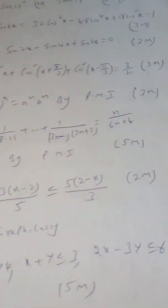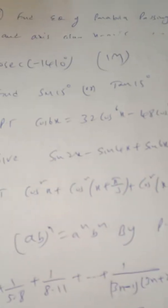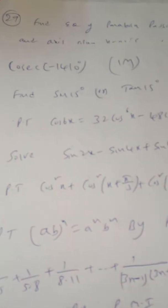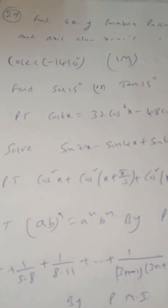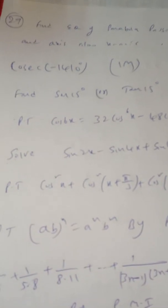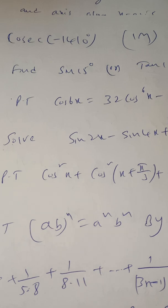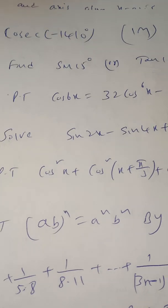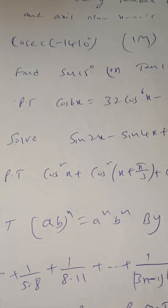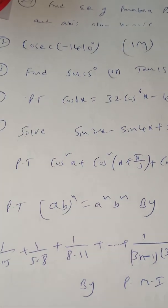In trigonometry, they may also ask: find the value of cosec(−1410°). This is one more question they will ask in 3 marks.